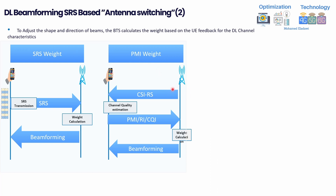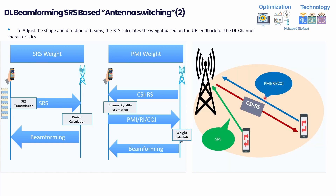Compared to CSI-RS based beamforming, the process involves: gNB transmitting CSI-RS, the UE estimating the channel, the UE sending feedback via PMI, rank indication and CQI, then the gNB calculating weights. In some cases, the downlink channel may change during this feedback loop, reducing accuracy. This is one advantage of SRS over PMI. However, SRS-based beamforming is not always better — it tends to give better performance near the cell center, while PMI/CSI-RS codebook gives better results for cell-edge users.